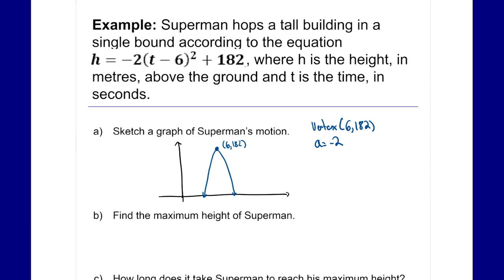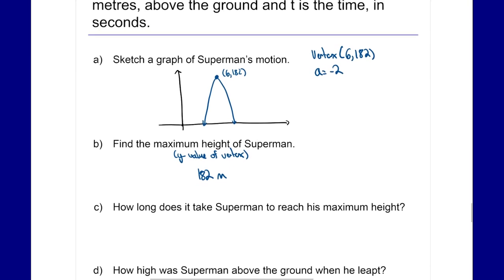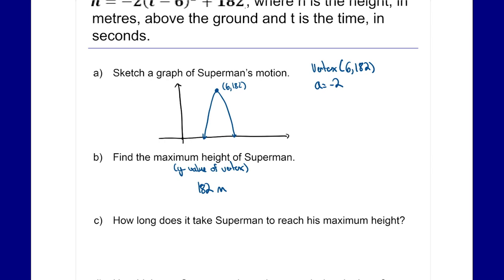Part b asks for the maximum height of Superman. The maximum height comes from the vertex — specifically the y value of the vertex when we're talking about a maximum, which is 182 meters. To find how long it takes him to reach his maximum height, that would be the x value of the vertex, which is six — so six seconds.